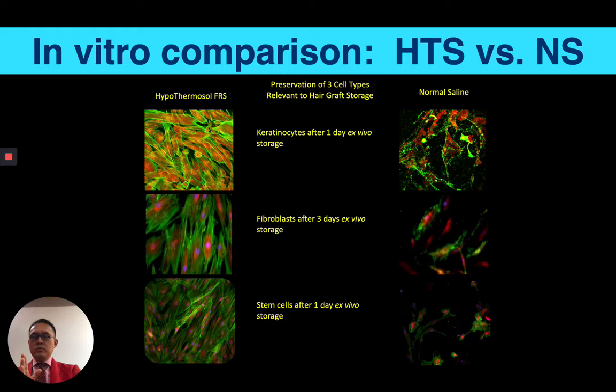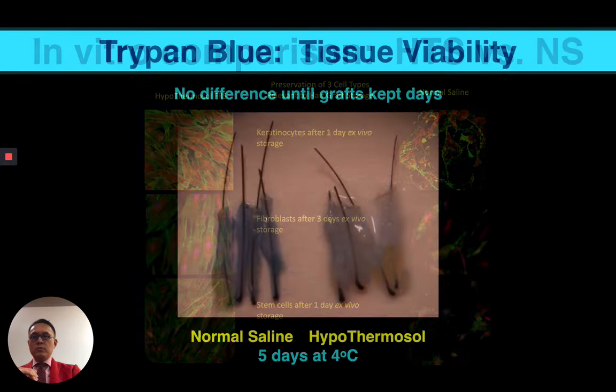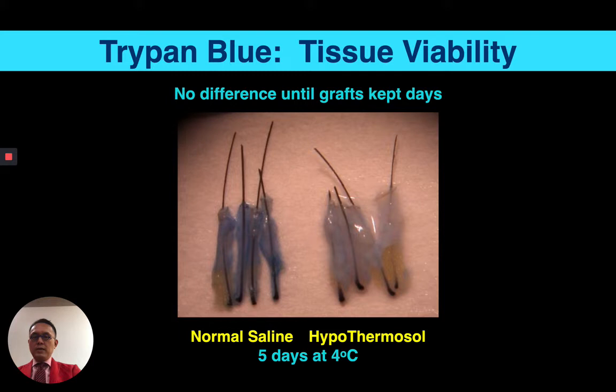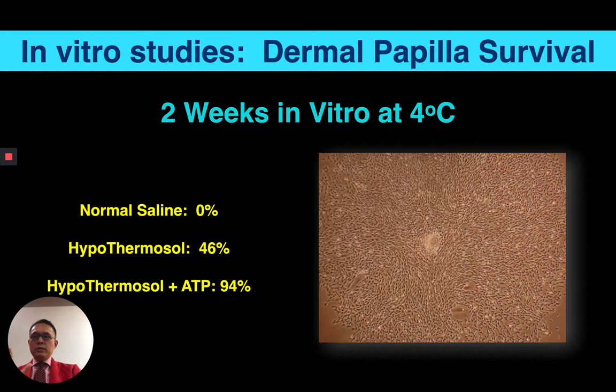If you look at immunofluorescence, hypothermosol — and I have no financial affiliations with these companies — shows that keratinocytes after a day still have great activity compared to normal saline. Fibroblasts at three days and stem cells after a day ex vivo still have great activity with hypothermosol versus normal saline. Trypan blue studies show no difference early, but after five days at four degrees, saline has a tissue viability issue. At two weeks in vitro, the dermal papilla shows zero activity with saline, whereas there's great survival with hypothermosol, and even better with hypothermosol plus ATP.